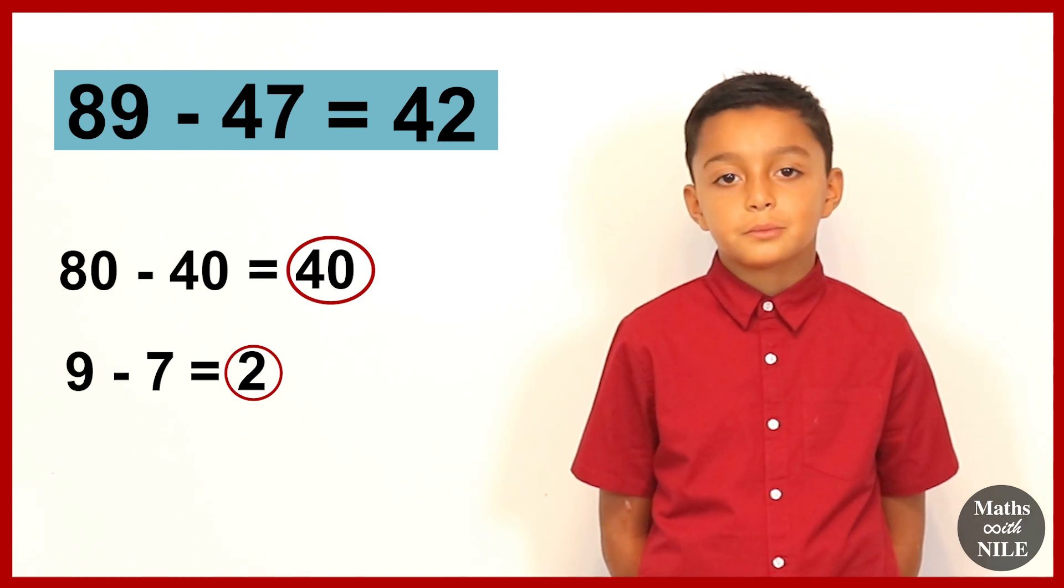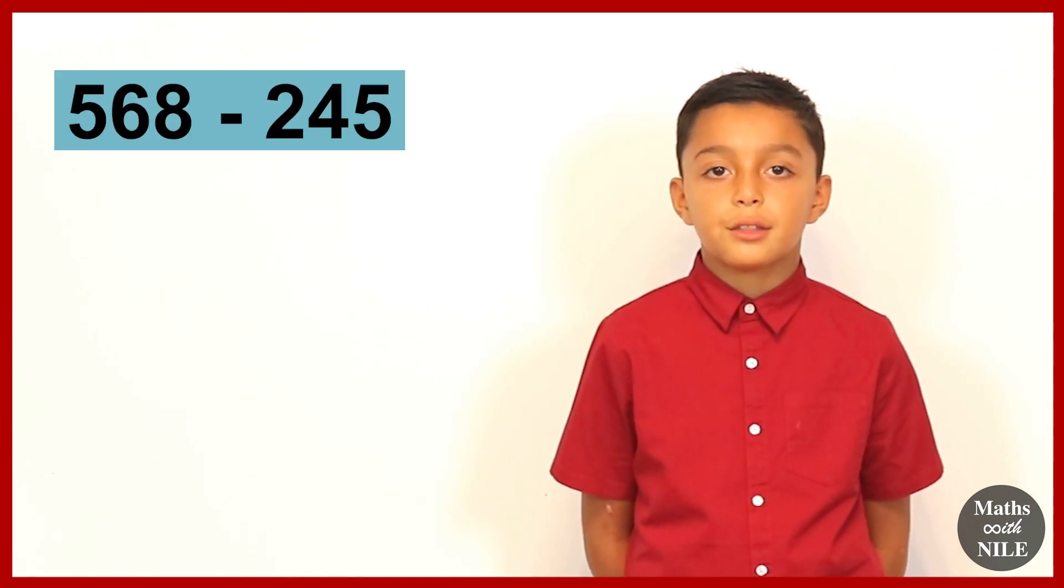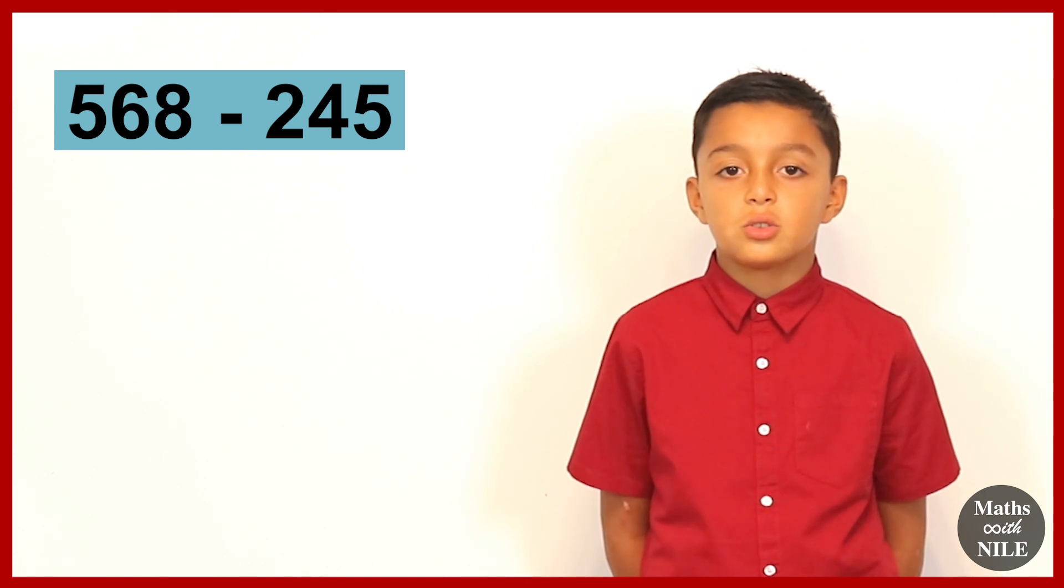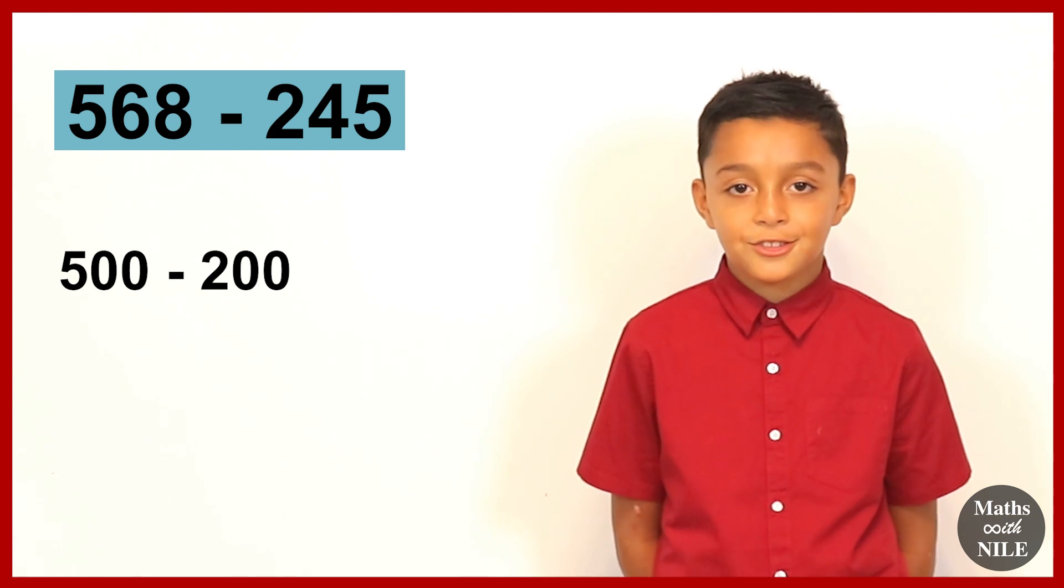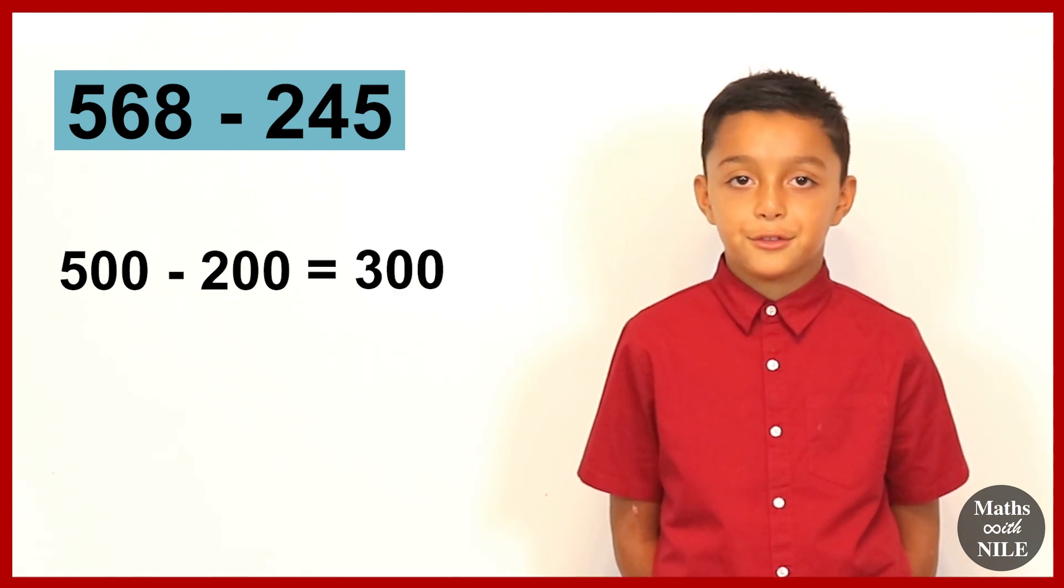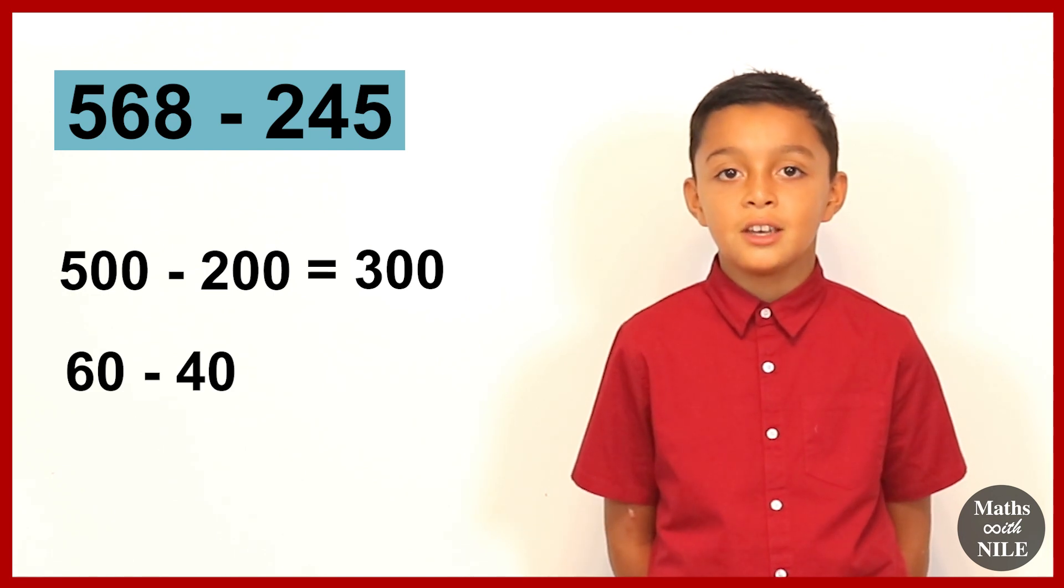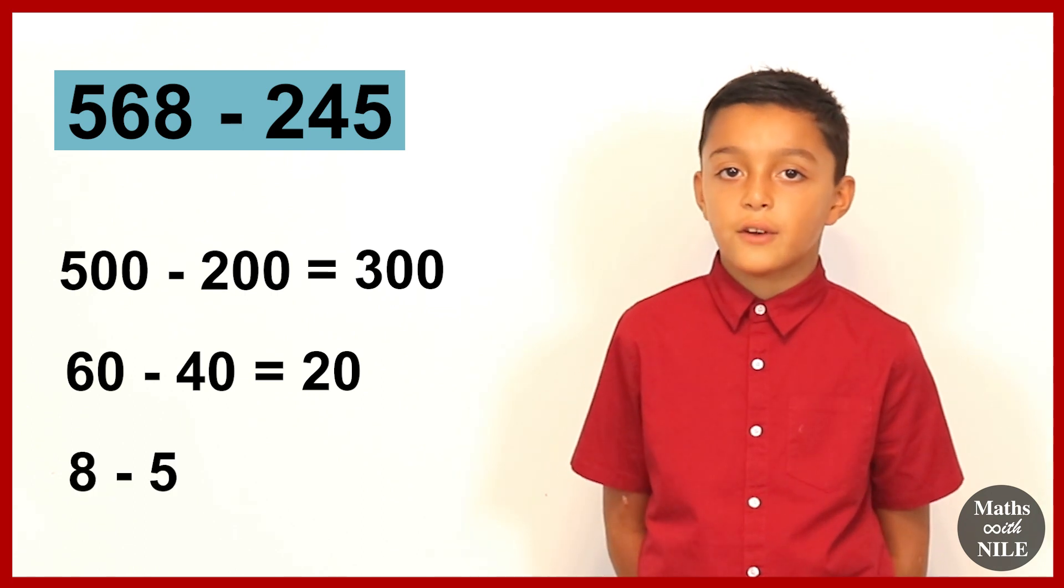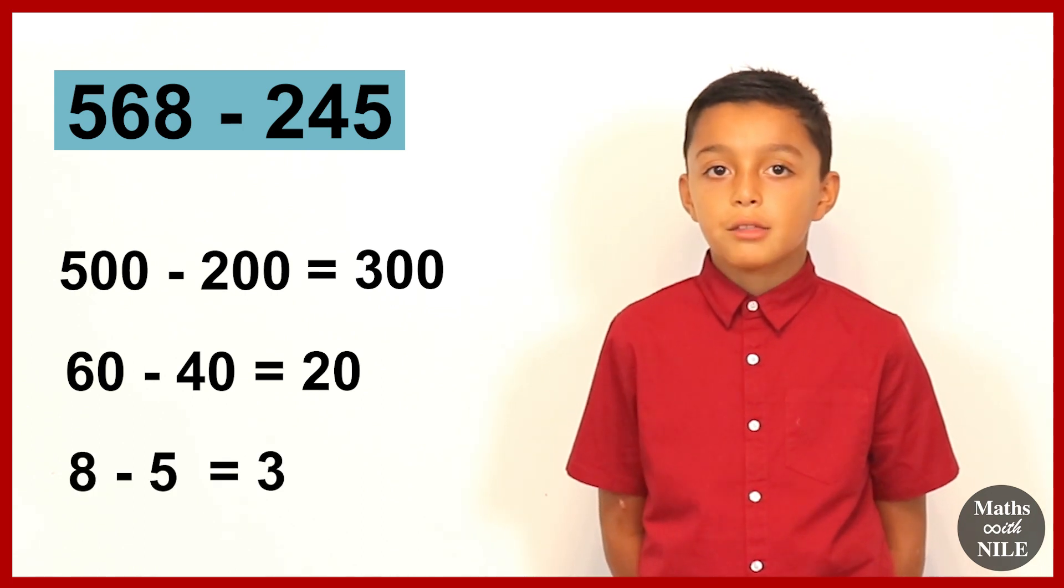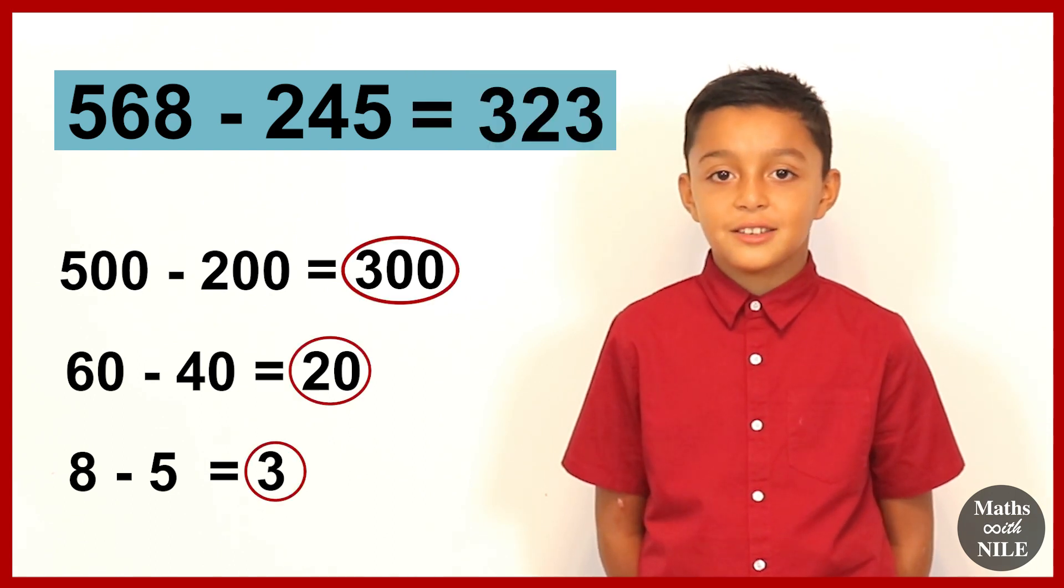Brilliant. What about a larger question, a question with bigger numbers? What does question 4 see? 568 take away 245. So we'll do 500 take away 200, which is 300, and then we'll do 60 take away 40, which is 20, and then we'll do 8 take away 5, which is 3. So the answer will be 323.